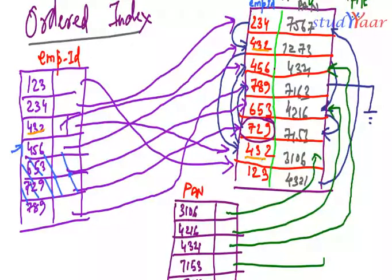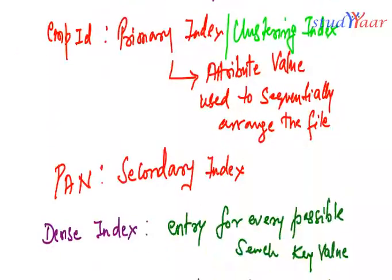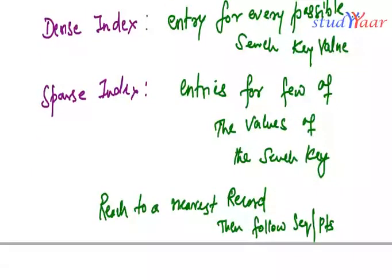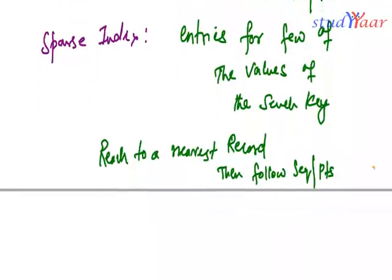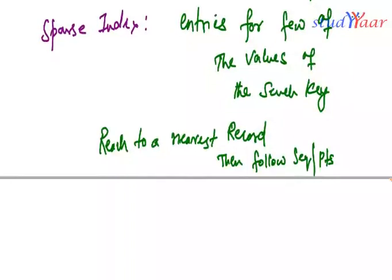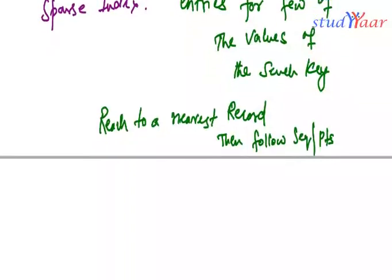For an ordered dense index, it is not necessary that both the values be stored because once I reach to the first value then I can obviously follow the pointer and locate my second value. So that is one thing you should keep in mind regarding dense indices.